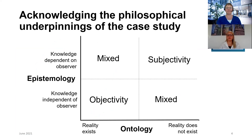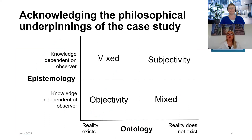What is often neglected is the philosophical underpinning — the research philosophy that is actually leading your study — and this needs to be made explicit at the front end. You need to make your assumptions explicit. One dimension is ontology, which tells us whether reality exists, spanning a continuum to reality does not exist. The other dimension is epistemology, the nature of knowledge, with the extreme positions being knowledge independent of the observer versus knowledge dependent on the observer.